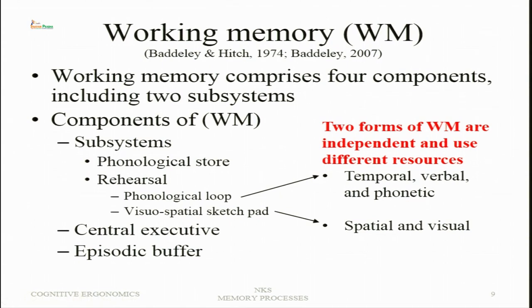Working memory comprises four components including two subsystems: the phonological store and rehearsal. The phonological store stores information in the form of phonological sounds. Rehearsal means information is rehearsed in working memory. There is a phonological loop — in which verbal information is rehearsed — and a visuospatial sketchpad. The phonological loop retains verbal information until an action is taken or the information is transferred to long-term memory.